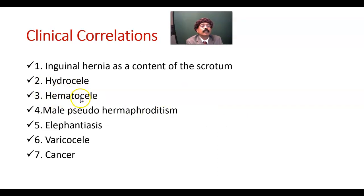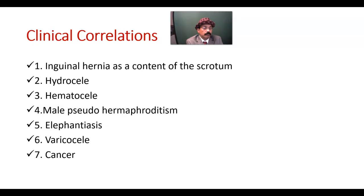Hematocele: the testis is vulnerable to injuries. Any trauma there may cause collection of blood in the testis — we call it hematocele. Male pseudohermaphroditism is possible because the testis developed from the labioscrotal swelling, whose homologous structure in the female is the labia majora. Sometimes the septation of the scrotum is not done — there may be a gap between the two compartments of the scrotum, indicating male pseudohermaphroditism.